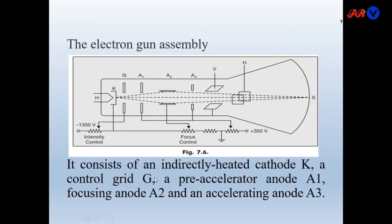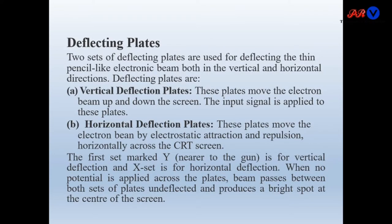It consists of an indirectly heated cathode K. A control grid G, also known as the intensity grid or intensity button in the CRO, controls the beam current or intensity of the beam. A pre-accelerator anode A1, focusing anode A2, and another accelerating anode A3 are also present. These are the deflecting plates.